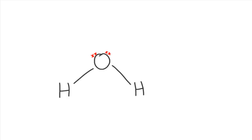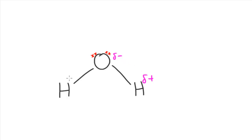This molecule is polar and we need to show that. In order to show that this molecule is polar, what we need to do is draw on the dipoles. So we need delta minus — this oxygen is slightly negative since it's more electronegative, it's going to be greedy with the electrons. And the hydrogens are both going to be slightly positive. So we just need to make sure we draw that on: delta plus, delta plus, delta minus.